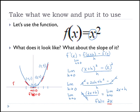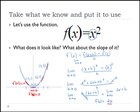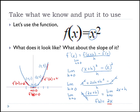So if we want to know the slope at any of these points, we plug the x value into 2x. The slope at negative 1: f prime of negative 1 equals negative 2. When we plug in 2, we get a slope of 4. And when we plug in 3, we get a slope of 6. So f prime of x equals 2x is a formula that gives us the slope at any point on our curve.